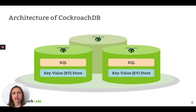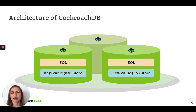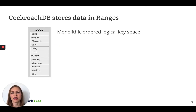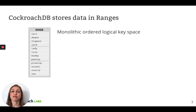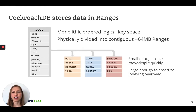Let's begin. To understand how we address this first challenge of fine-grained data placement, you need to understand a bit about the architecture of CockroachDB. CockroachDB is a shared-nothing system and consists of a distributed SQL layer on top of a distributed key-value store. Logically, the key-value store is laid out in a single monolithic ordered key space. For example, here you can see a database of dogs, which I'll use as a running example throughout the rest of this talk. Ranges are about 64 megabytes in size, which is configurable.